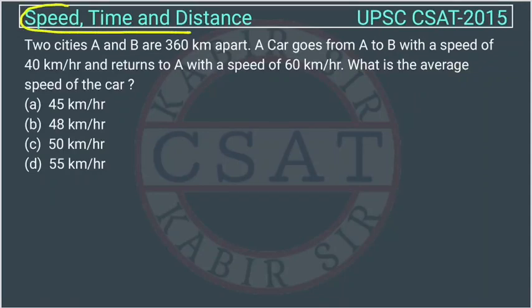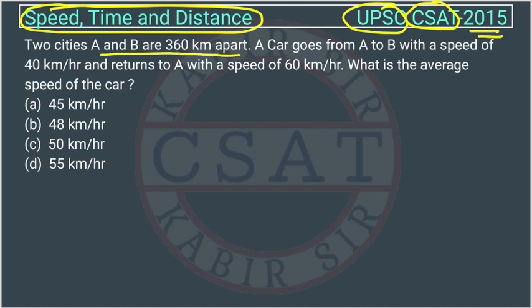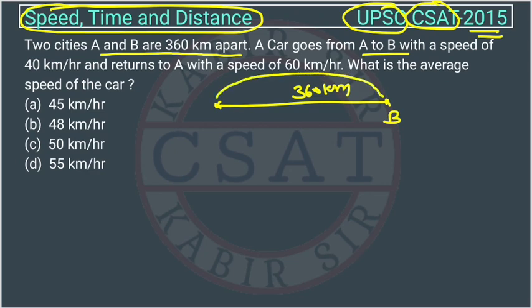This is a question from the Speed, Time and Distance chapter, asked by UPSC in their CSAT paper of 2015. Two cities A and B are 360 km apart. A car goes from A to B at a speed of 40 km per hour and returns to A at a speed of 60 km per hour.